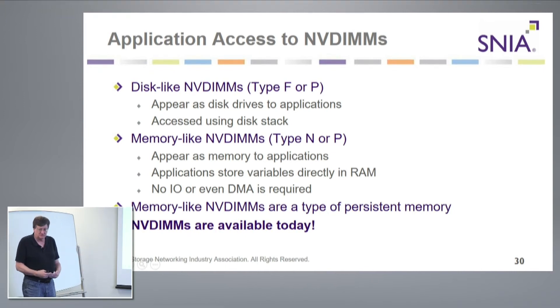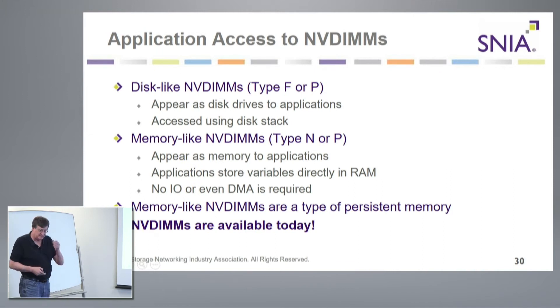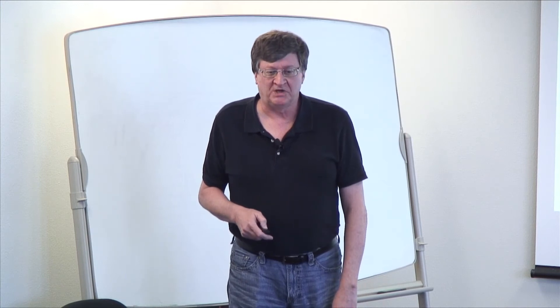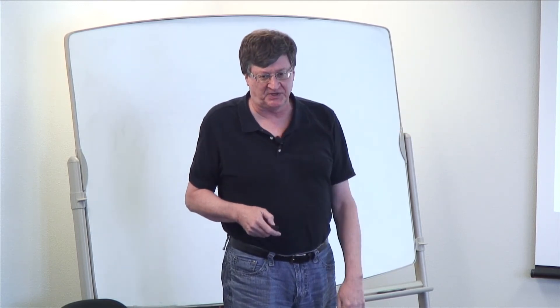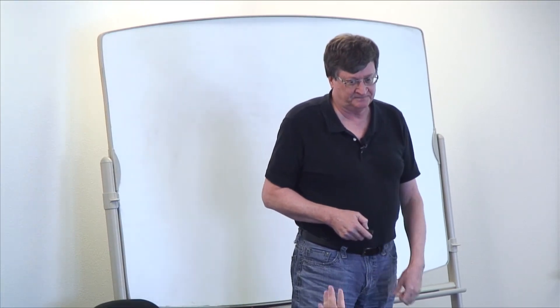You're saying there cannot be a type-F memory-like NVDIMM? It uses block semantics because it is a block device — it is made out of all block-semantic materials, like NAND. So there must be some translation in the middle, but the application thinks it's a disk. Couldn't someone make one? You'd have to make an inline translator. But at the end of the day, you have a block device on your hands, as opposed to N's and P's which are not necessarily block devices — they also have memory semantics.